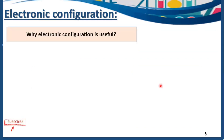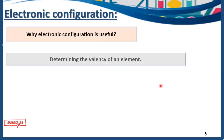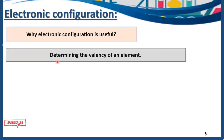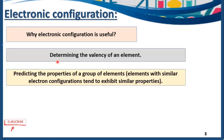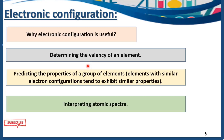Why is electronic configuration useful? Electronic configuration is useful in order to determine the valency of an element. It is also used to predict the properties of a group of elements. Elements with a similar electronic configuration tend to exhibit similar properties. Those elements who have the same electronic configuration and the same valence shell have the same properties. Electronic configuration is also useful to interpret atomic spectra.